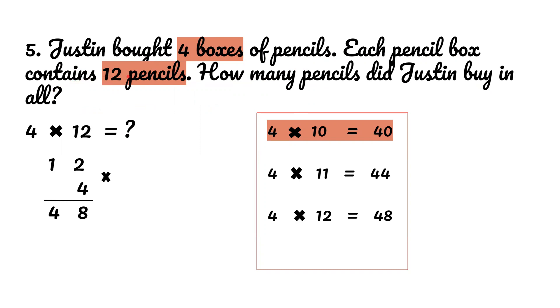Step one we highlight all the numbers in the problem which is 12 and 4 and since we know we are doing multiplication word problems we put 4 times 12. First we can do column multiplication. Since I know 4 times 2 is 8 and 4 times 1 is 4, the answer is 48. You can also do it another way. Since we all know 4 times 10 equals 40, 4 times 11 equals 44 and 4 times 12 equals 48. So the answer for this problem is 48.